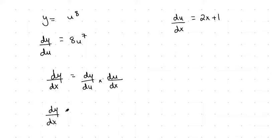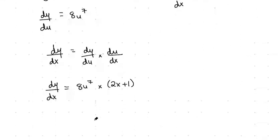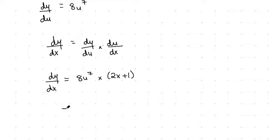So we're going to have dy/dx is equal to dy/du, which is 8u to the power of 7, multiplied by du/dx, which is 2x plus 1. Now that's not the question finished. What we would need to do here then is replace our u back with what we said it was.